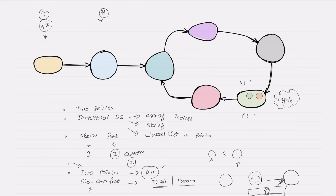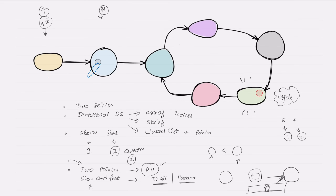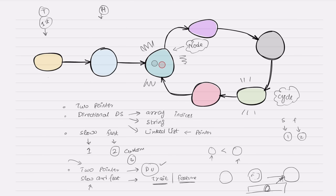That's the first question answered: detecting a cycle. Slow moves with factor one, fast moves with factor two, and they detect the cycle when they meet. Now, if asked where the cycle starts: once the cycle is detected, pick one pointer and place it back at the very start. Then move both pointers forward one step at a time; the point where they meet again is the entry point of the cycle.